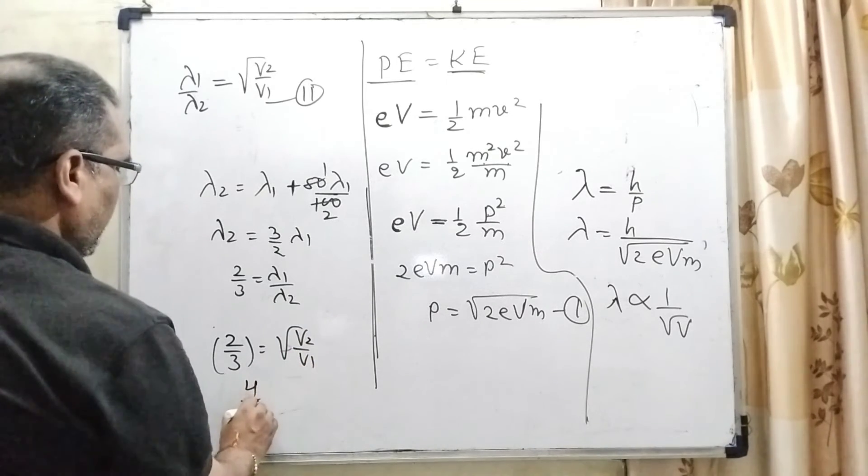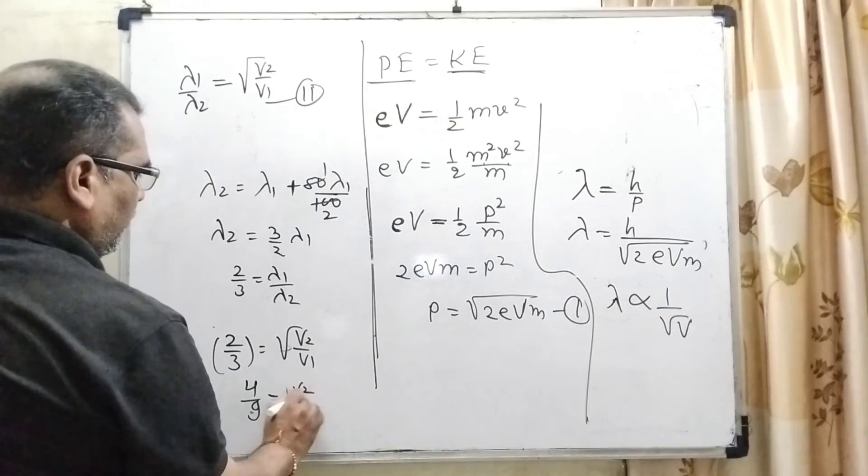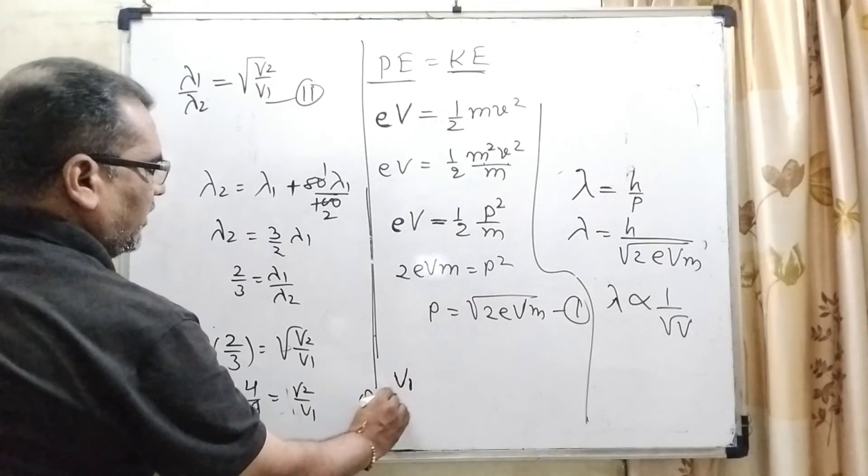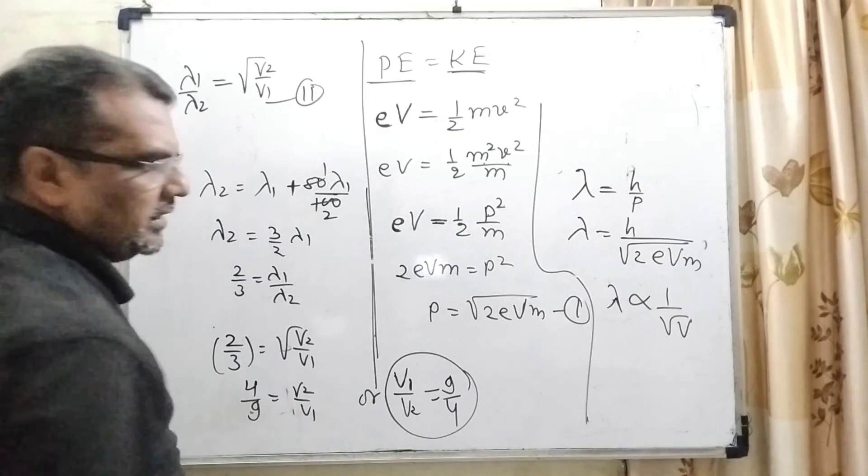Squaring both sides, we get 4/9 = V₂/V₁. But we need V₁/V₂, so the answer is 9/4. This is the correct answer, option (b).